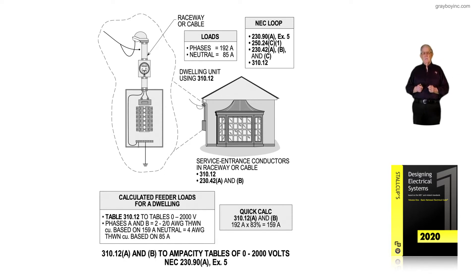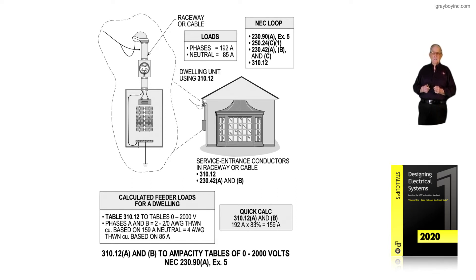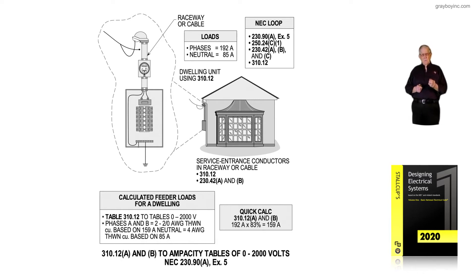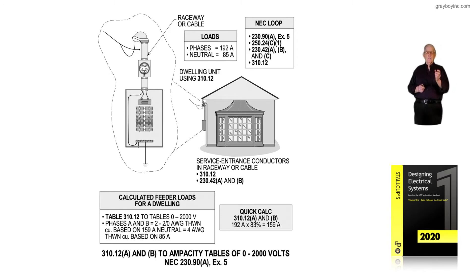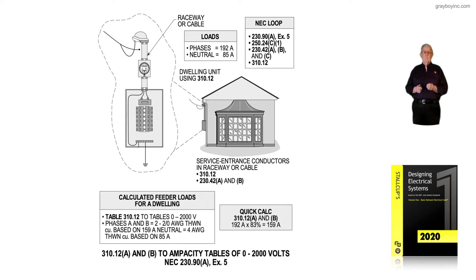The old edition of the NEC listed 310.15B7, which dealt with the 83% rule. But now we look at 310.12A and B — A for a service, B for a feeder — which deals with the 83% rule to reduce the conductor ampacity, say from a four-aught to a three-aught or from a three-aught to a two-aught. Section 310.15B7 has been relocated and renumbered as 310.12A, B, and C.